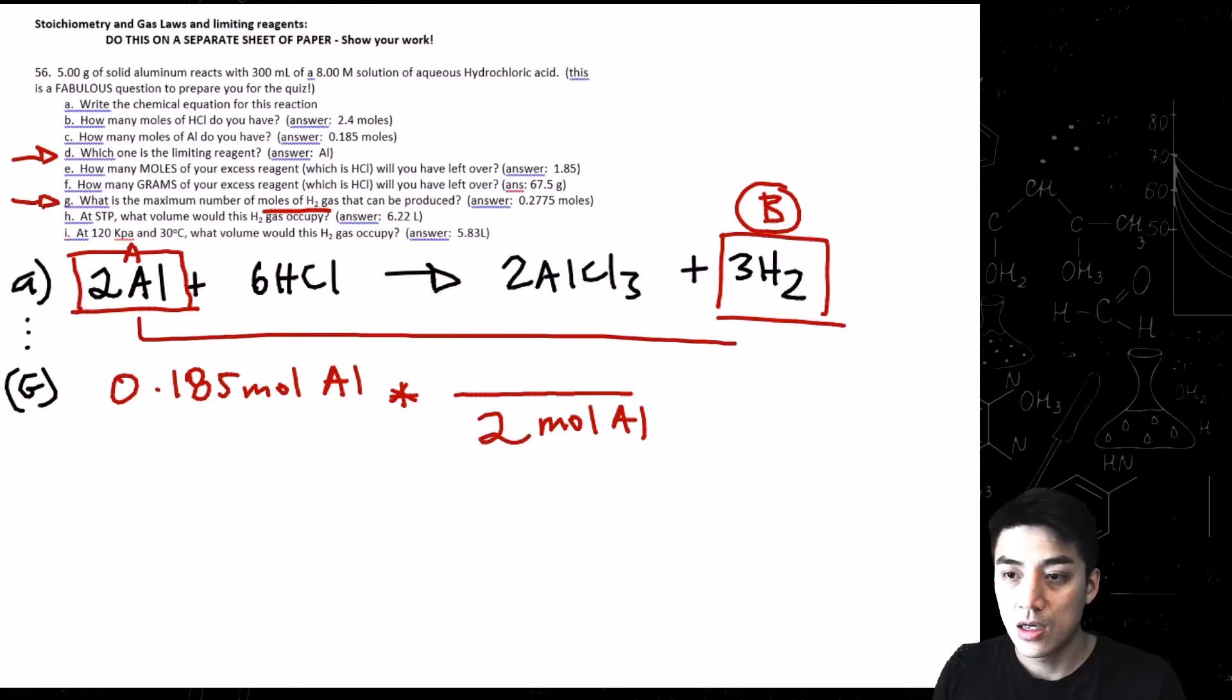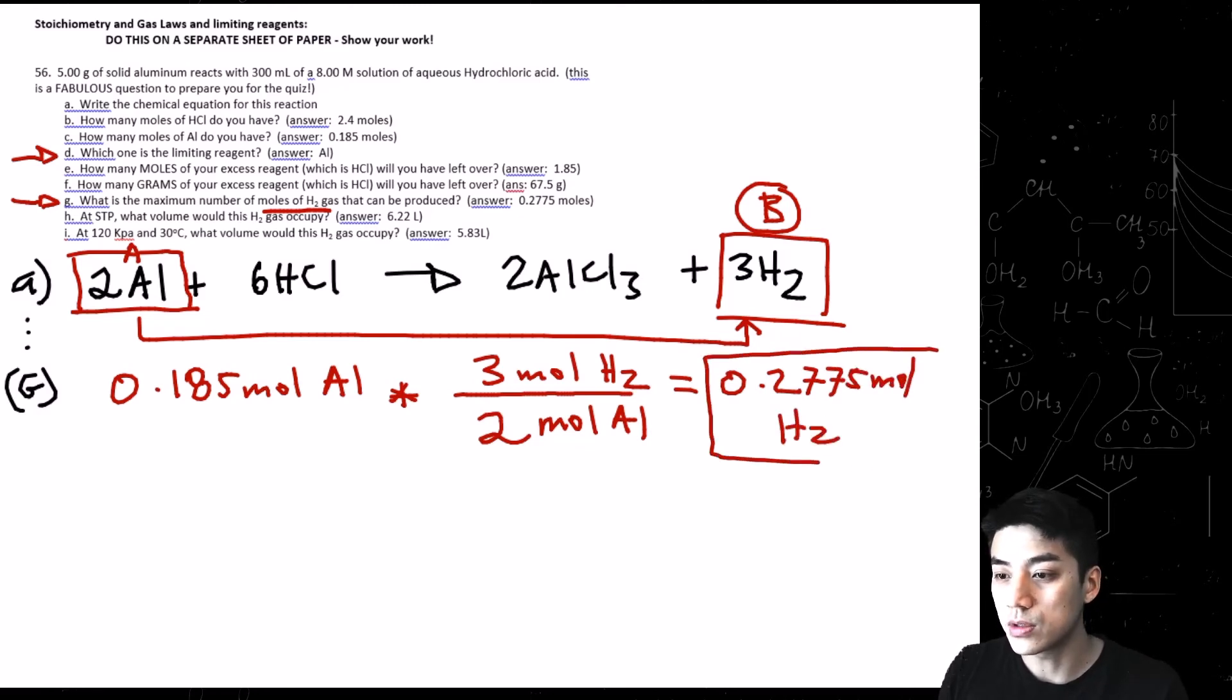So if I want to find moles of H2, I'm simply going to just cut and paste. This one's super easy. So 0.185 moles of Al, times sign, draw a line. And we're going from moles of A to moles of B, which means you just cut and paste. So just put the 3 over the 2, and then our answer is going to be 0.2775 moles of H2. That's letter G.